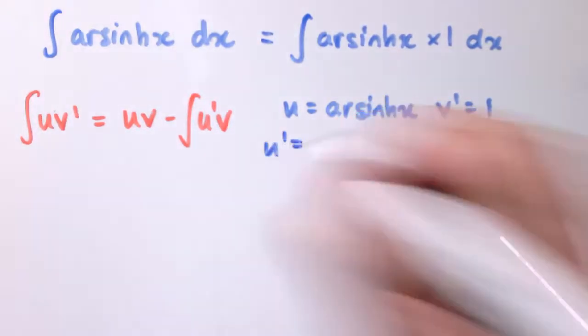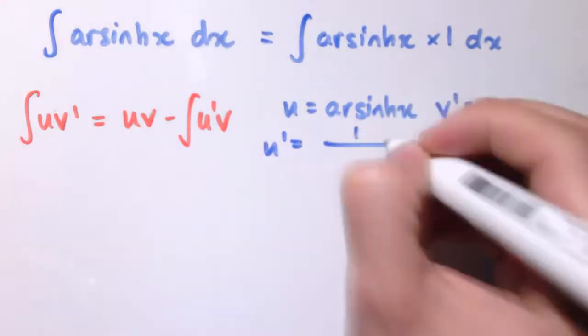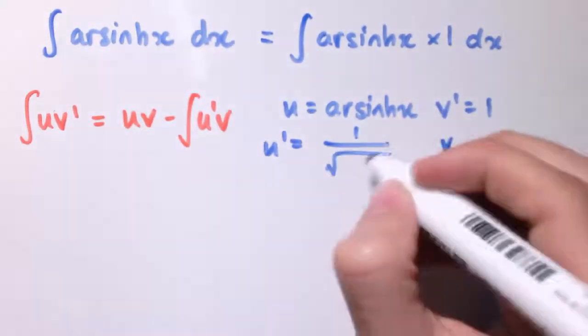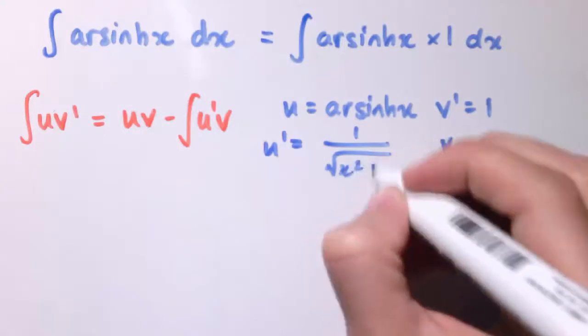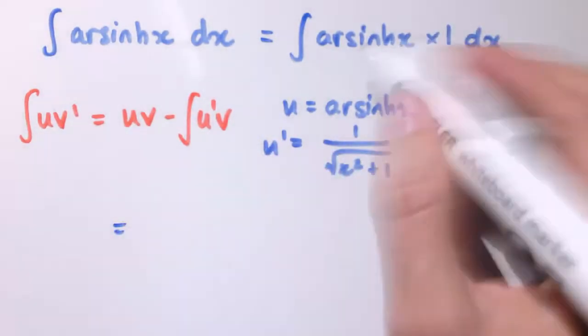Also we know how to differentiate arcsinh of x. I've done that in another video, so I'm not going to go through that. But you know that we get 1 divided by the square root of x² + 1. This allows us then to compute this integral.